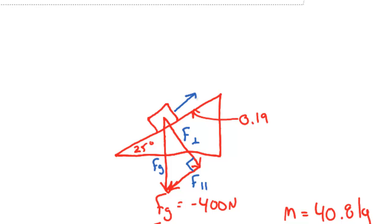To find the net force, we compare forces acting either perpendicular or parallel to the surface. There's going to be a force of friction going backwards, a normal force that the surface exerts on the object, and a downhill portion of gravity — the force parallel. If this is a 25-degree angle, then this angle here is also 25 degrees. Using sine and cosine, we can find force perpendicular and force parallel. The hypotenuse of the triangle is 400 Newtons.